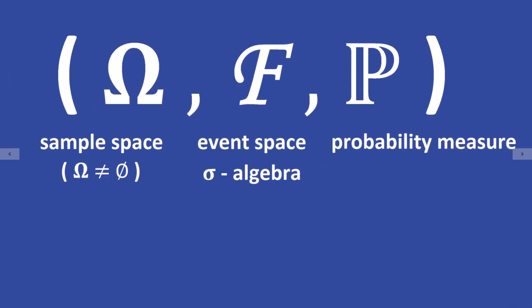Let me sum up. A probability space is a non-empty set Omega, together with the sigma algebra F, which consists of the events, and a probability measure P, which assigns each event in the event space a probability.